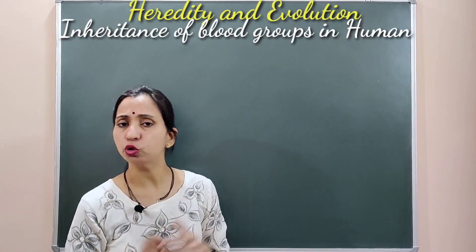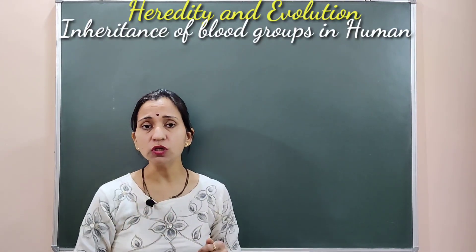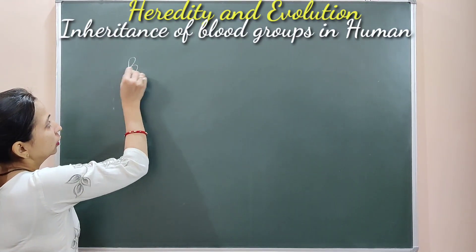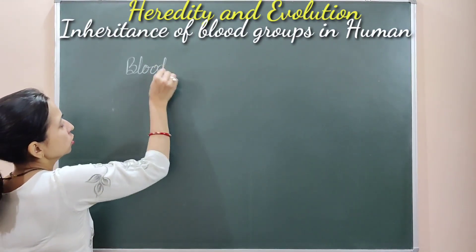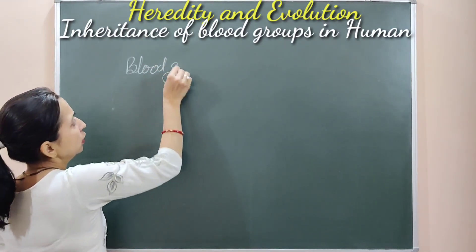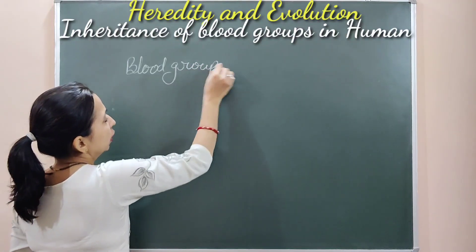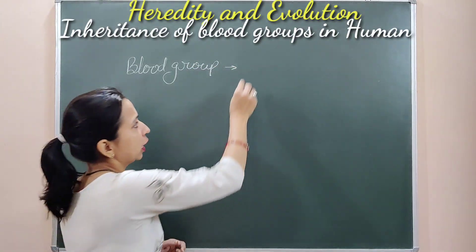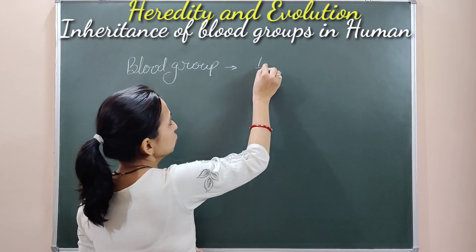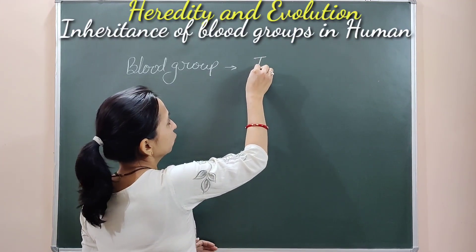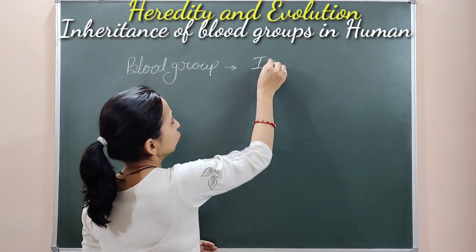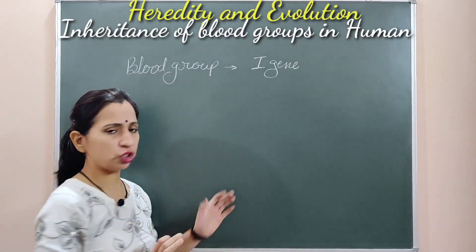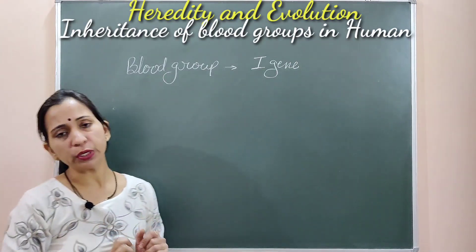In this similar way, the blood group is also inherited from parents to their offspring through some genes. The genes which are responsible for the inheritance of blood group are known as I genes. So I genes are responsible for the inheritance of blood group, and these genes are present on a particular chromosome.